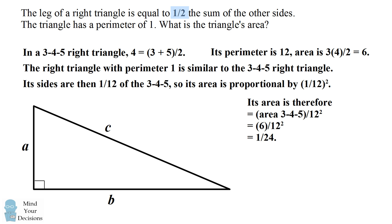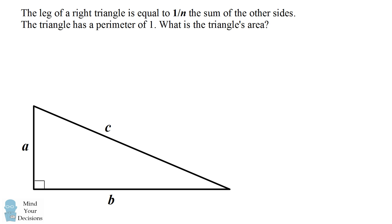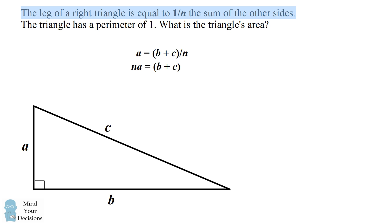This is fine for competition math, but now let's go through the algebra to confirm the triangles are in fact similar and solve the problem more generally. Suppose the leg of a right triangle equals 1/n times the sum of the other sides, for an appropriate value of n. We set up the equation that one side equals 1/n the sum of the other sides, which we rewrite as n times A equals B plus C.